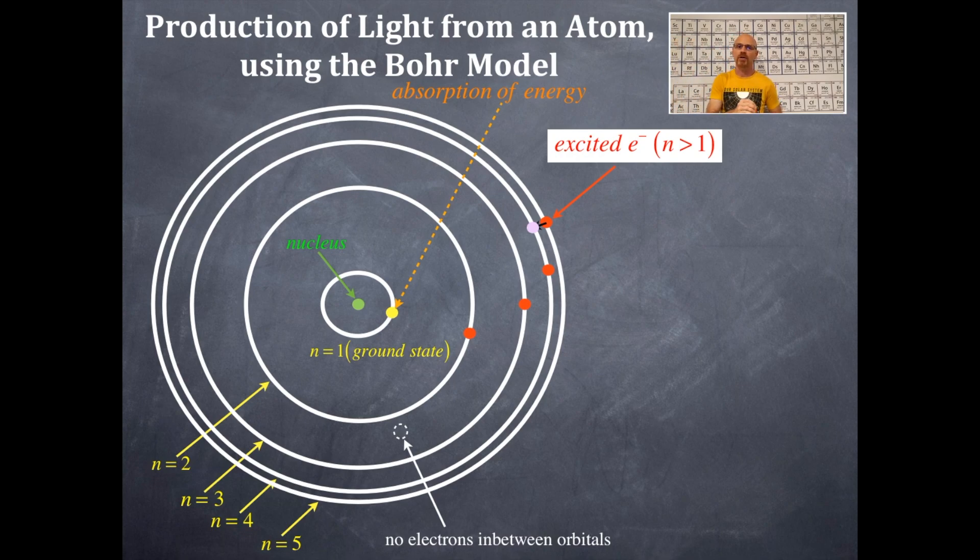So, I've just moved this electron from n equals 5 to n equals 4. When that electron falls, moves to a lower energy level, it will emit light. That light is equal to the distance of fall.